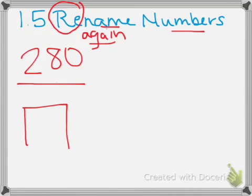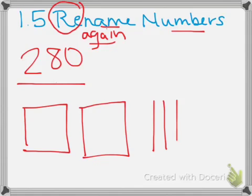Well the first thing they did was they grabbed a 100 flat, another 100 flat to represent the 200s. And then they gave me 8 ten rods.